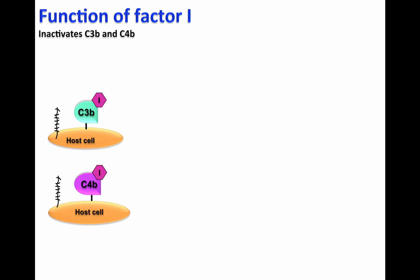Factor I is a protease that will cleave C3b, generating iC3b, the inactive form of C3b. iC3b will not be able to form the C3 convertase of the alternative pathway, C3bBb.